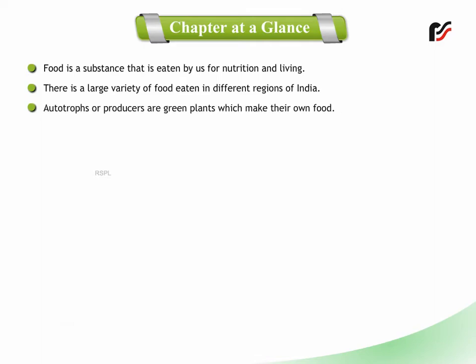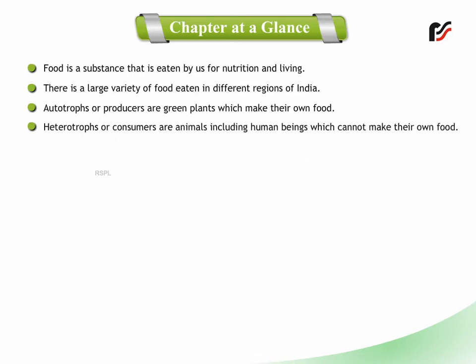Autotrophs or producers are green plants which make their own food. Heterotrophs or consumers are animals including human beings which cannot make their own food.